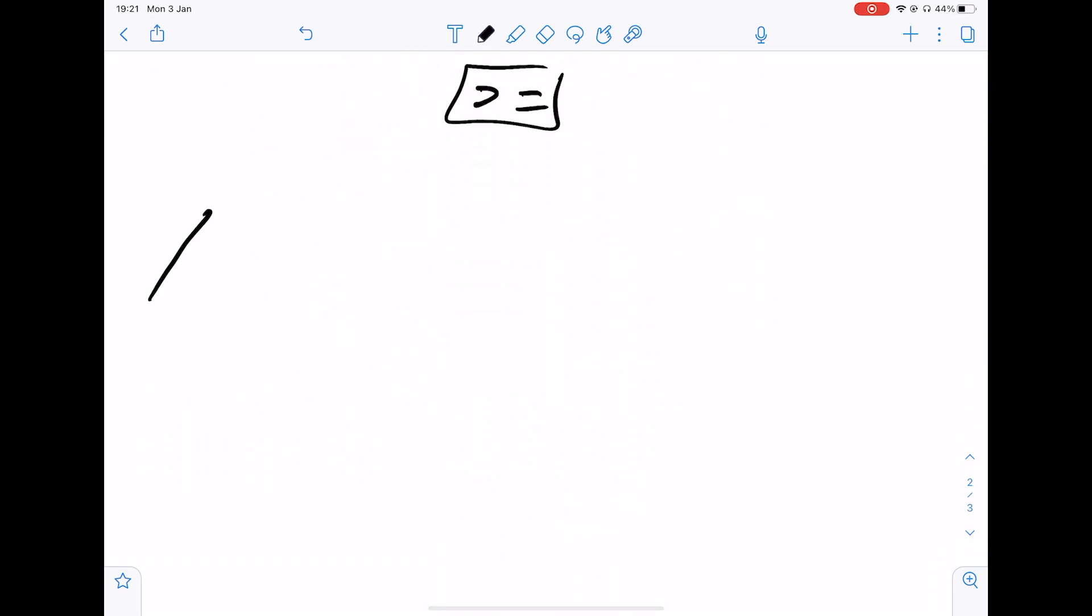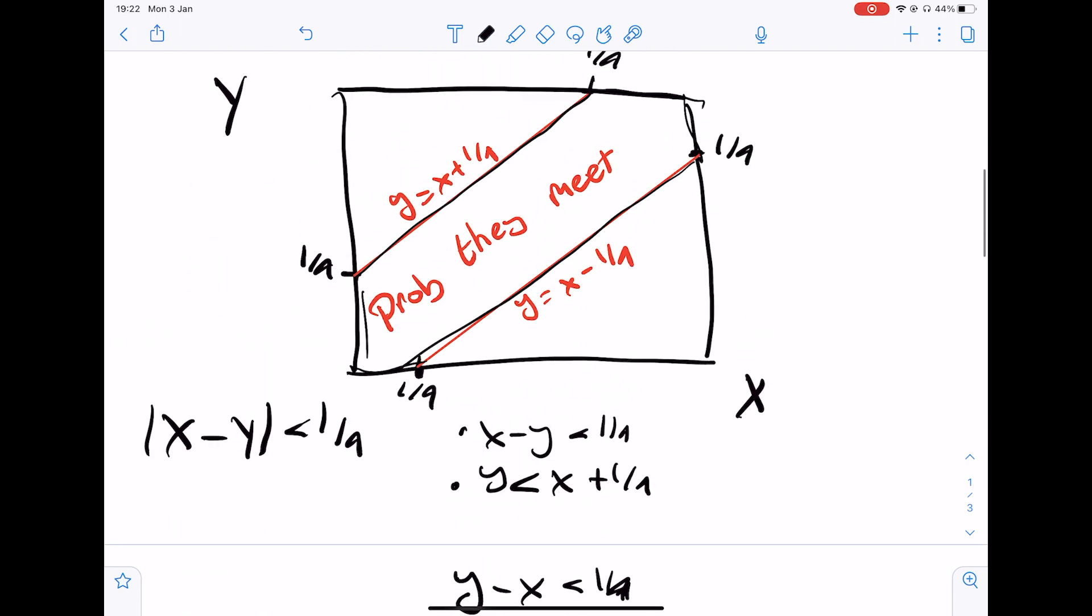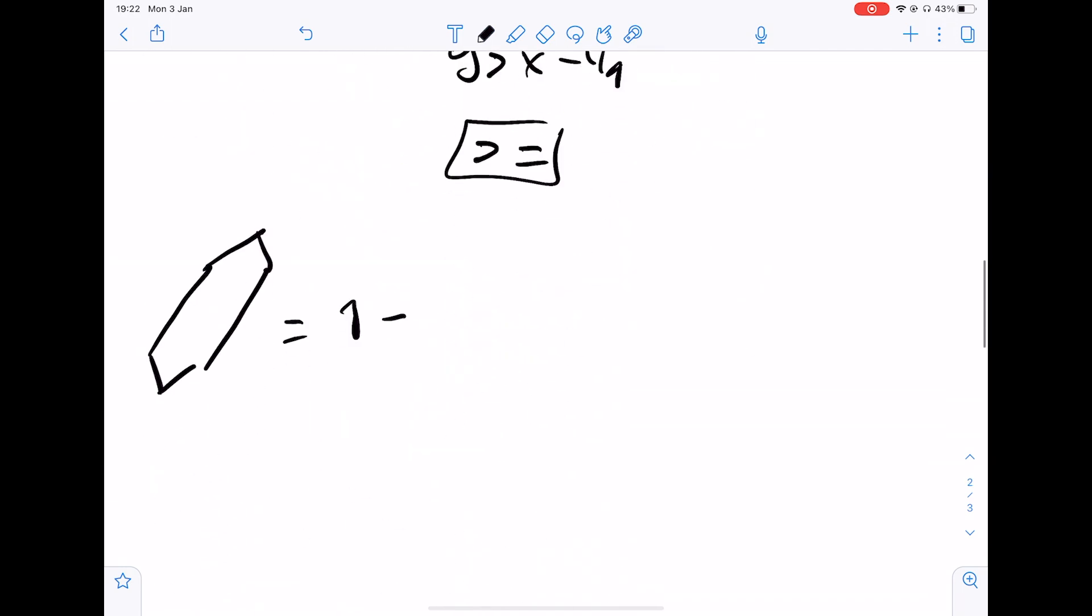So we're going to do that. This little area if you like is just equal to 1 minus these sections here. So we've got this little square here, the triangle sorry, and this little triangle here.